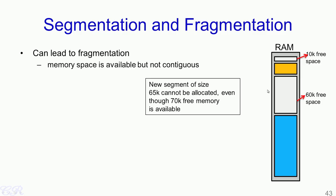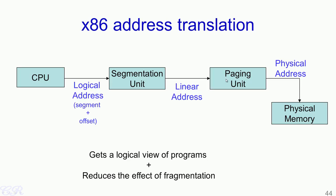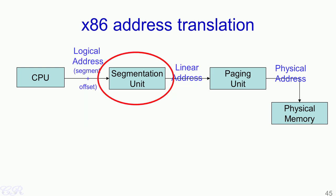Fragmentation is one of the biggest limitations of segmentation. However, fragmentation is much less an issue with virtual memory. We will now look at how Intel x86 systems make use of both segmentation as well as paging, so that the advantages of both are obtained. In an x86 system the CPU generates a logical address comprising of a segment plus an offset. This is sent to a segmentation unit which then generates a linear address. The paging unit, which is essentially the virtual memory management, takes the linear address and generates the physical address.